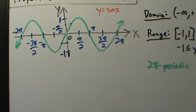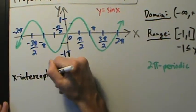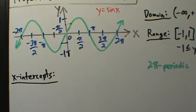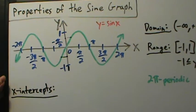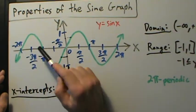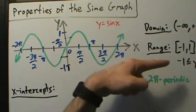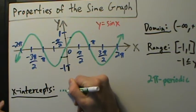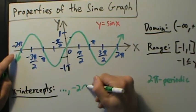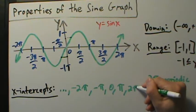Some other things worth talking about are intercepts. For x-intercepts: in general, an x-intercept is a value of x where you're on the x-axis. Looking at the graph, those occur at negative 2π, negative π, zero, positive π, positive 2π — and we can keep going infinitely far in both directions.